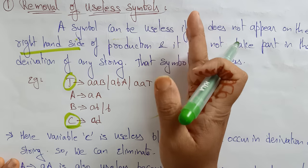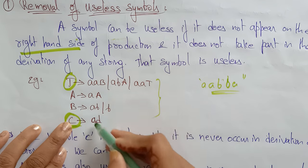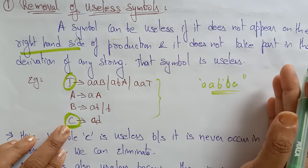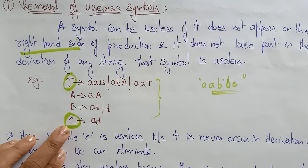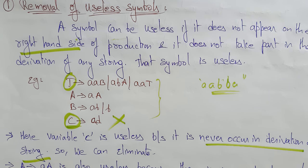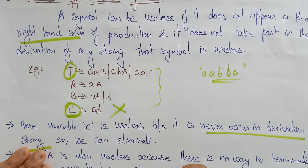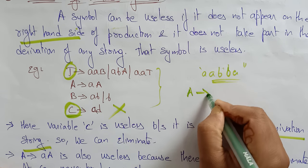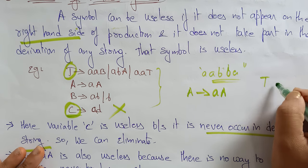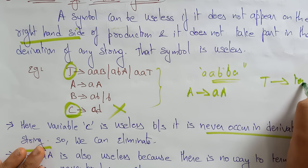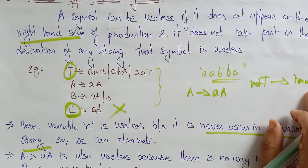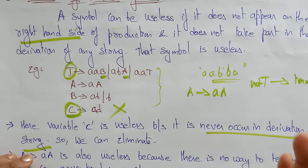This is the left-hand side and this is the right-hand side. A symbol C is not appearing on the right-hand side of the production and it does not take part in derivation of any string — we are not using C here. Also, D terminal is not used. So the variable C is useless because it never occurs in the derivation string; we can eliminate C. Now, are there still any production rules that are useless? The right-hand side should eventually yield only terminals.